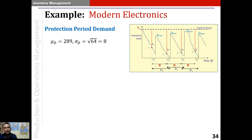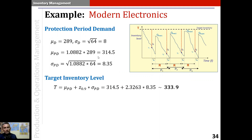Now we compute the parameters for protection period demand. The mean of demand μ_d is 289, and σ_d is √64 = 8 — these are given. Using μ and σ of the protection period, μ_pd equals the mean protection period multiplied by the mean of demand, which comes to 314.5. Similarly, the standard deviation of protection period demand σ_pd becomes 8.35. So the mean and standard deviation of protection period demand are 314.5 and 8.35 respectively.